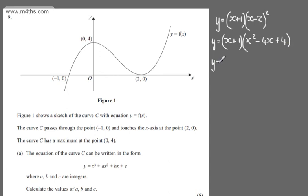If I now multiply through, y is going to be equal to, starting with the x, x cubed minus 4x squared plus 4x, and then with the 1, I'm going to end up with plus 1 lot of x squared minus 4 lots of x plus 4.